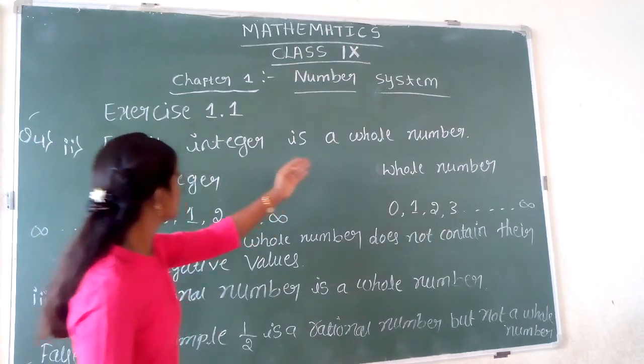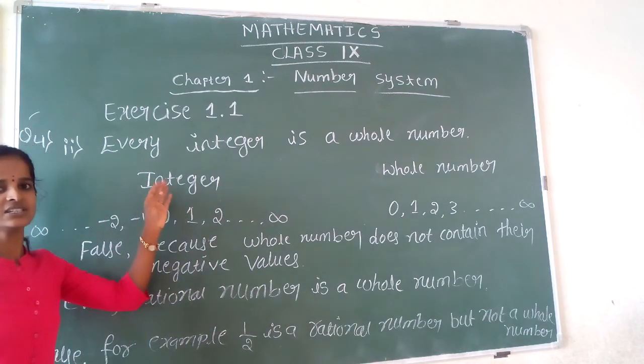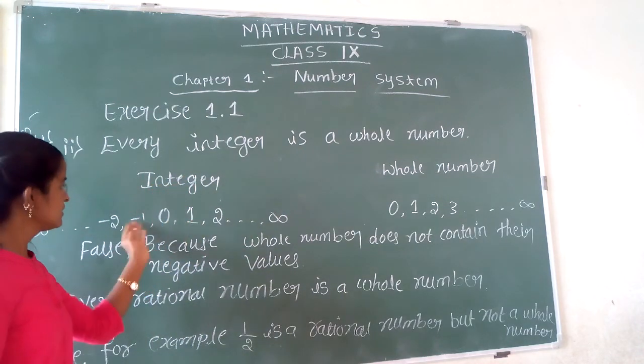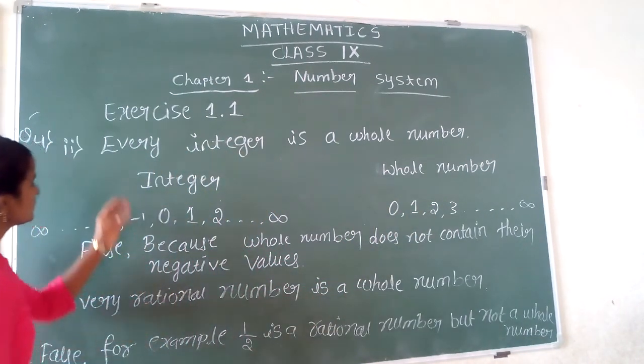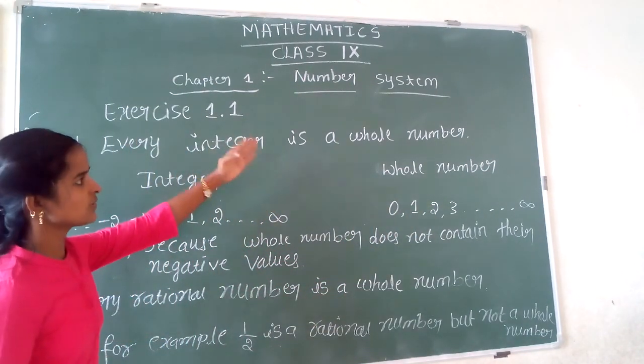Every integer is a whole number. Integer contains both positive and negative values, but whole number contains only positive values. Therefore, the given statement is every integer is a whole number.